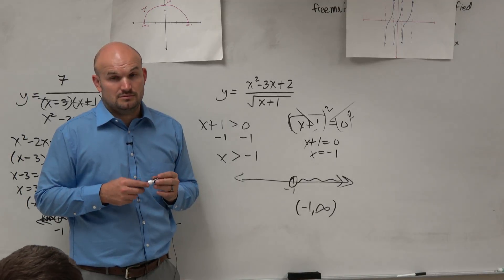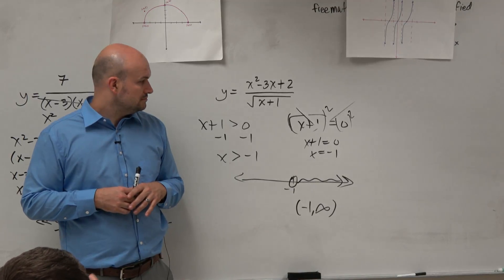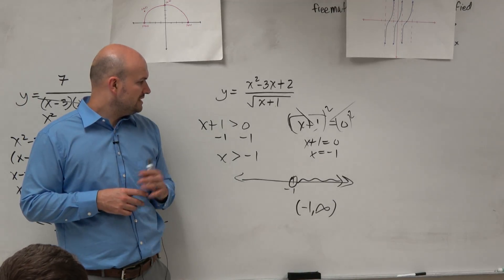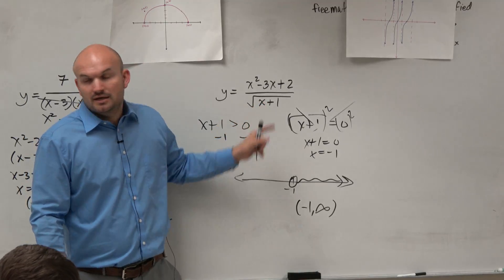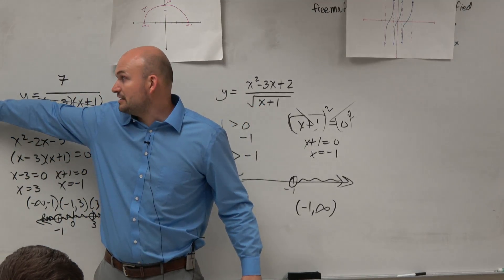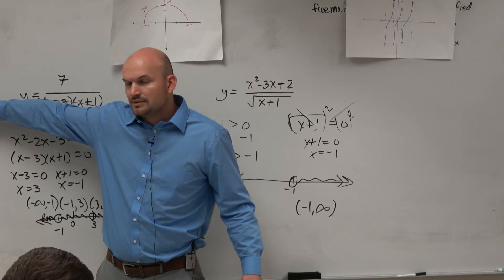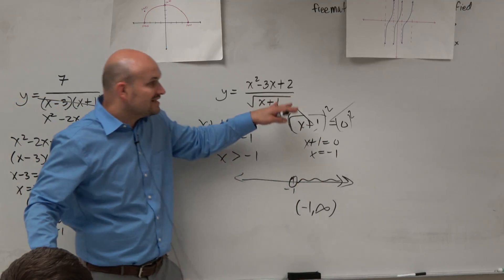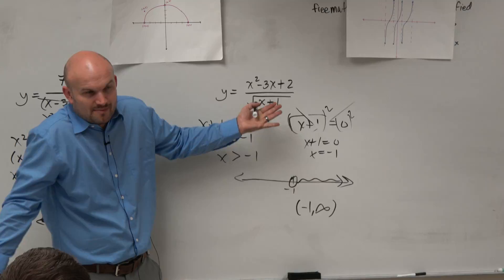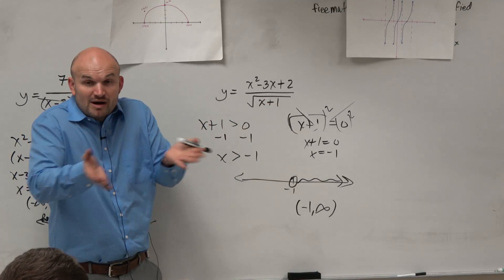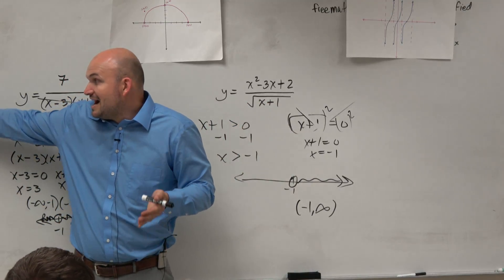Yes? Yeah, because we can't have it equal to 0. Here, could you take the square root of 0? Yes. Yes, it's fine. You just can't take the square root of 0 when it's in the denominator. Because that makes the denominator 0. Square root of 0 is 0. It's fine here.